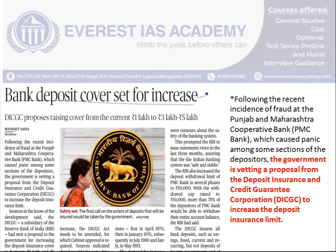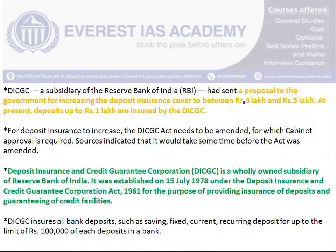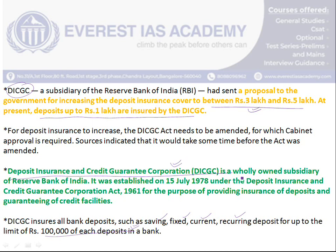The next article is about bank deposit insurance cover being set for an increase. The Deposit Insurance and Credit Guarantee Corporation (DICGC) provides insurance for bank deposits. Currently, insurance covers deposits only up to 1 lakh — including savings, fixed, current, and recurring deposits — for each depositor in a bank. Due to various problems, the government wants to increase this insurance limit to somewhere between 3 lakh and 5 lakh. The DICGC, which is a subsidiary under the RBI, was set up in 1978 and has agreed to this change.